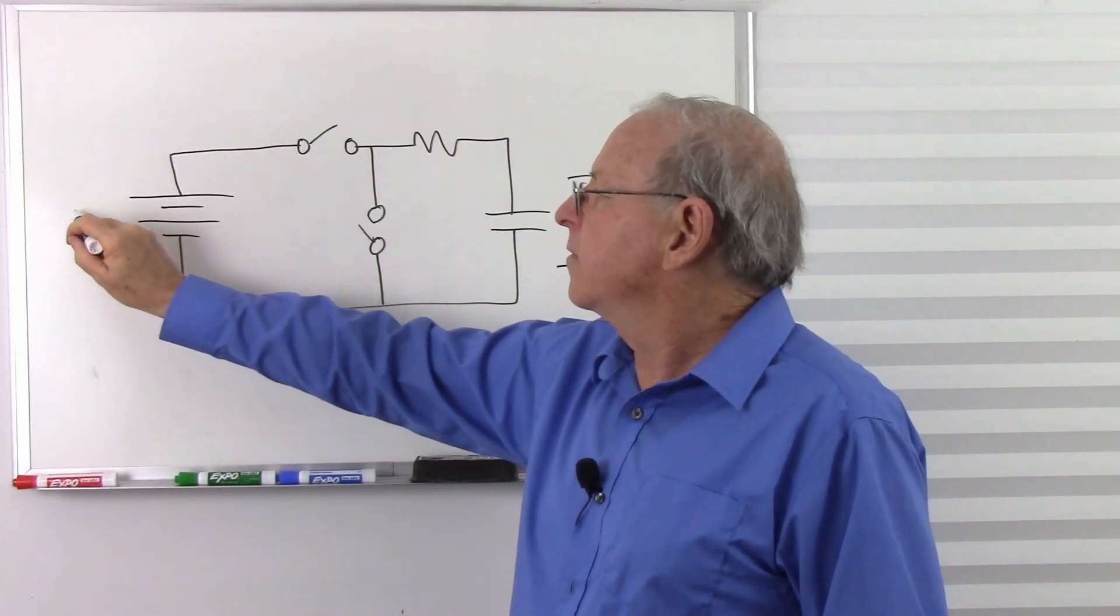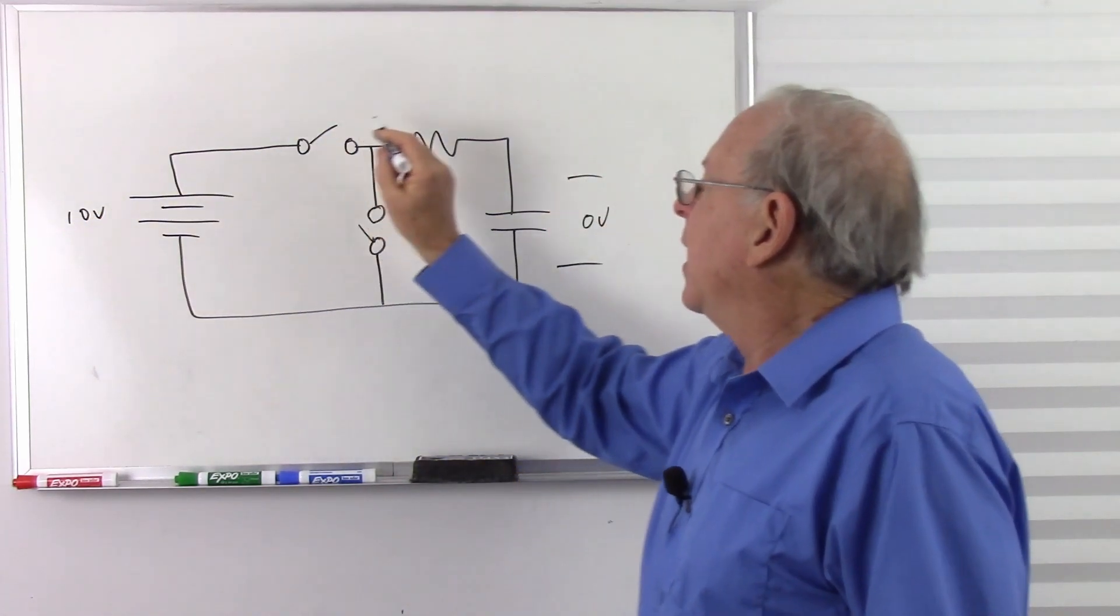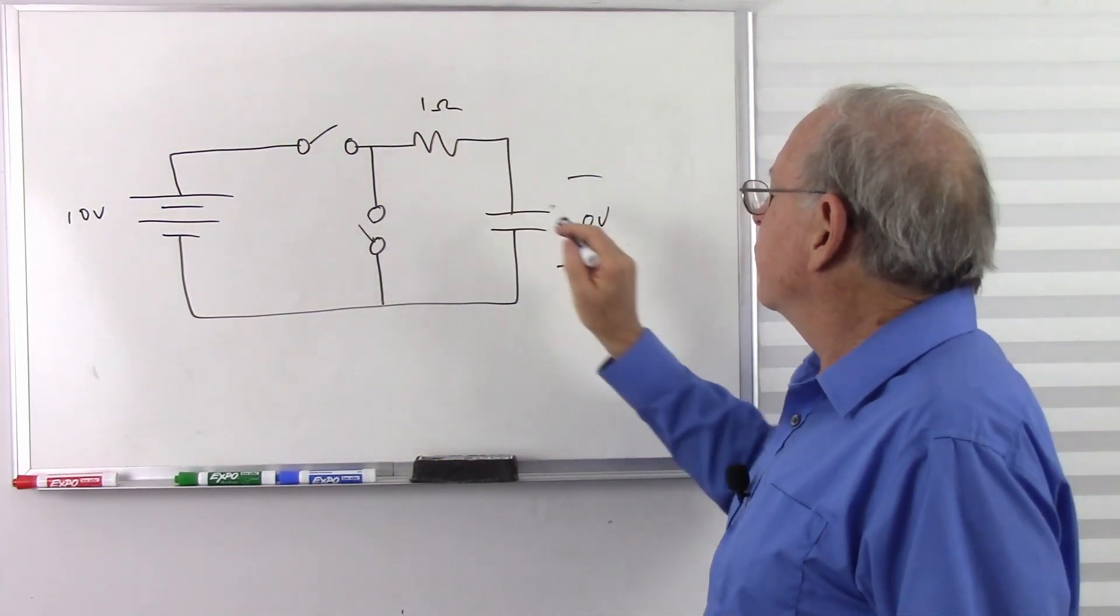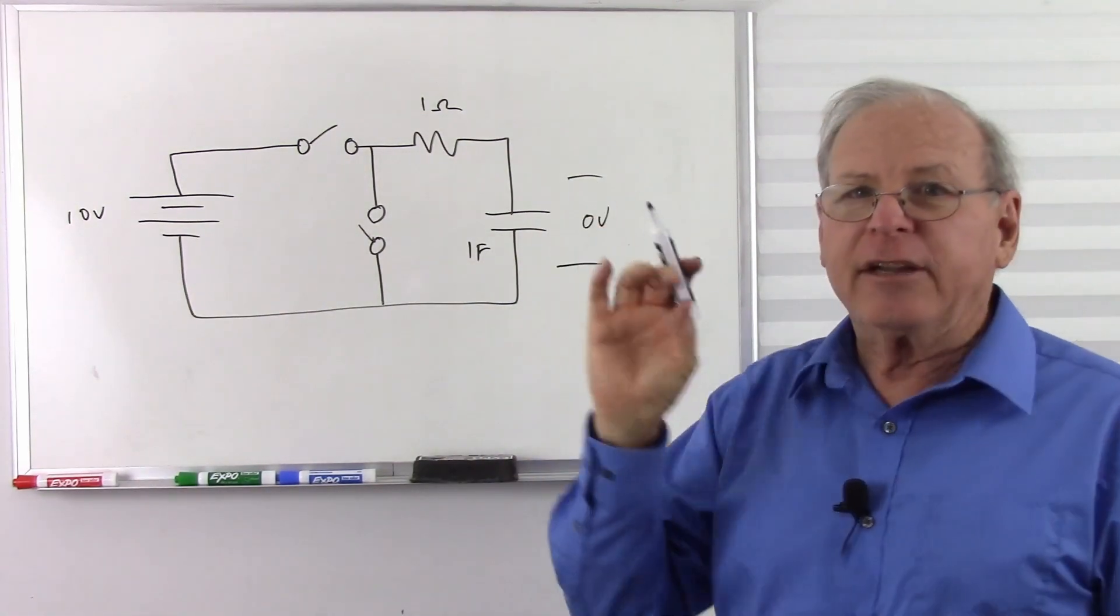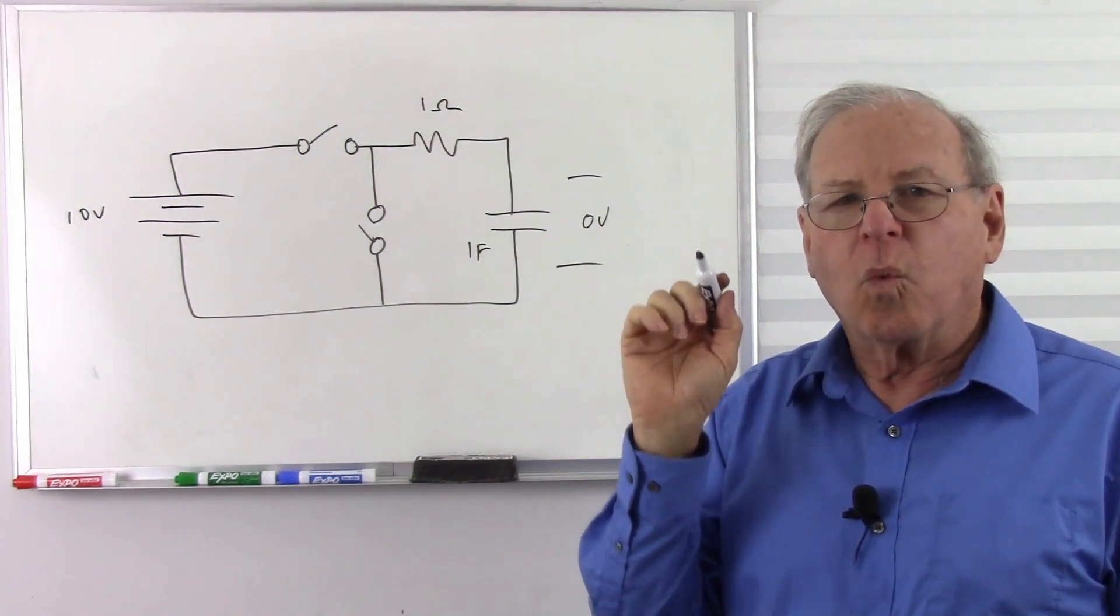Let's open up that and get ready to charge the capacitor. So let's say we have a 10 volt battery, and let's make this a 1 ohm resistor and a 1 farad capacitor. Why? Because that will give us a time constant of 1 second.